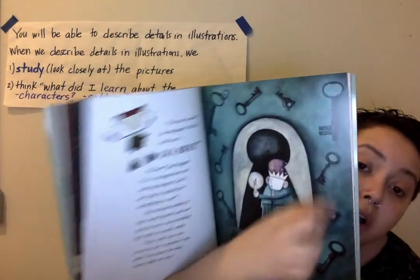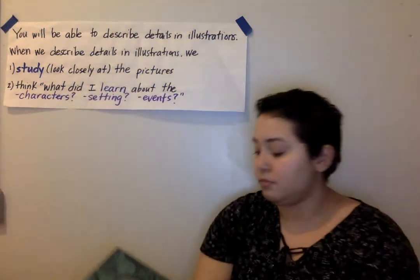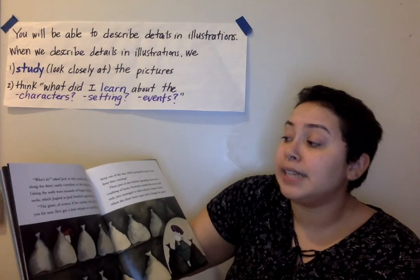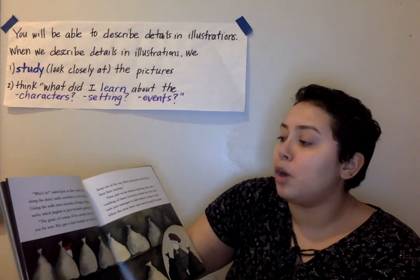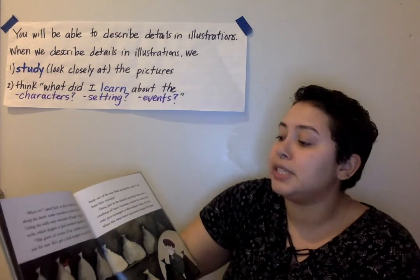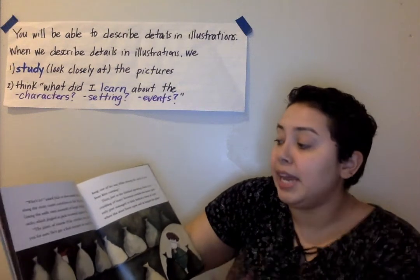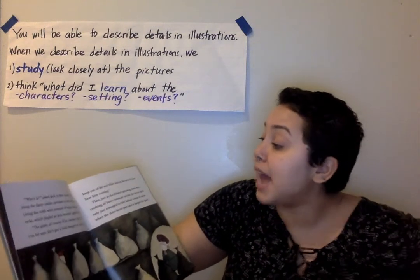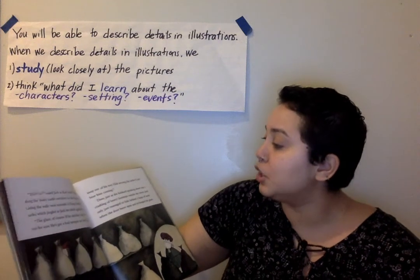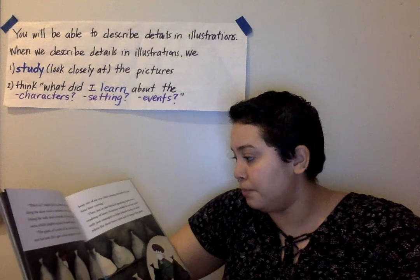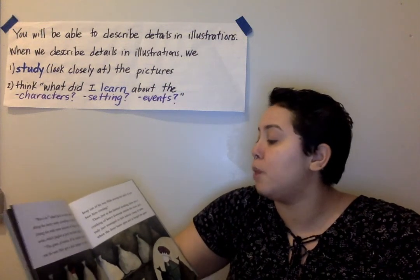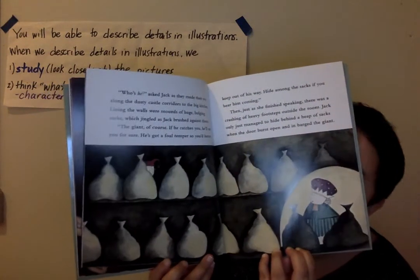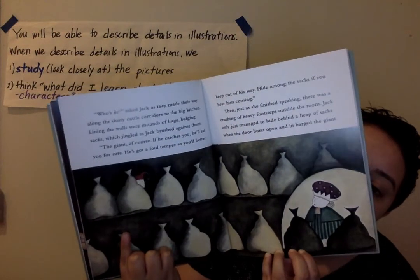Now, these must have been all of the keys that she used to open the door. "Who's he?" asked Jack as they made their way along the dusty castle corridors to the big kitchen. Lining the walls were mounds of huge bulging sacks that jiggled as Jack brushed against them. "The giant, of course. If he catches you, he'll eat you for sure. He's got a foul temper, so you'd better keep out of his way. Hide in the sacks if you hear him coming." Then, just as she finished speaking, there was a crashing of heavy footsteps outside the room. Jack only managed to hide behind a heap of sacks when the door burst open and in barged the giant. Jack is over here in the corner, hiding behind some sacks.